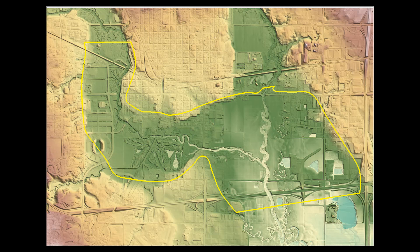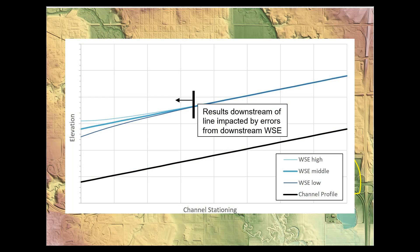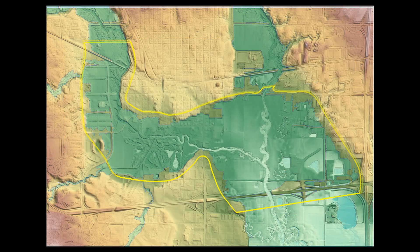The downstream limit can also be located at significant hydraulic controls, such as a weir crest. A sensitivity test can be used to assess how variations in the downstream boundary impact the model results at the location of interest, and adjustments can be made to the downstream limit if necessary.